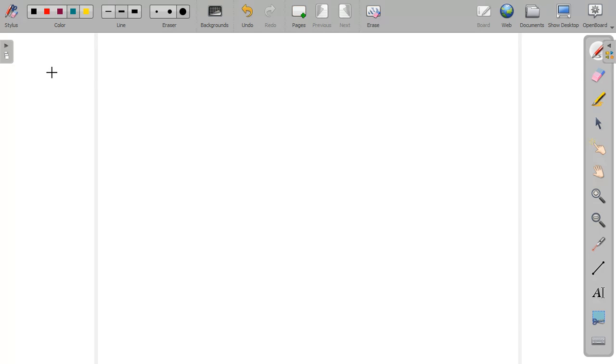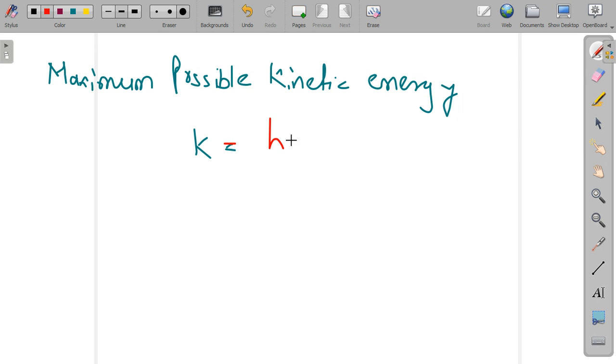So first of all, we calculate the value of maximum possible kinetic energy, which is given as k equals hc divided by lambda minus phi.